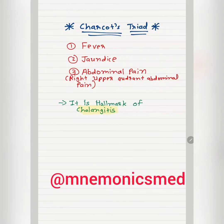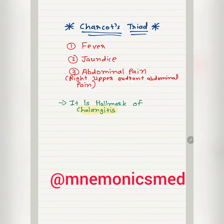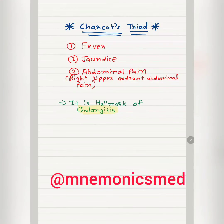Charcot's Triad has three components: fever, jaundice, and right upper quadrant abdominal pain. It is the hallmark of cholangitis. You have to remember fever, jaundice, and right upper quadrant abdominal pain in Charcot's Triad.